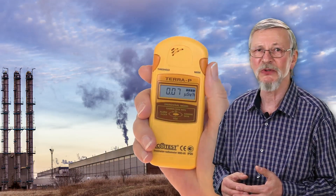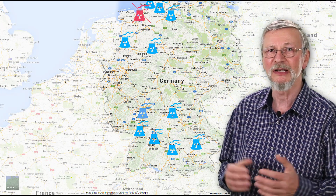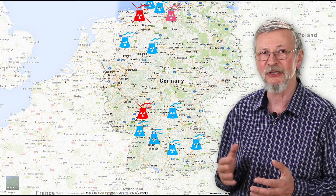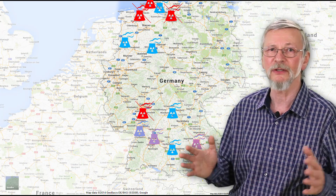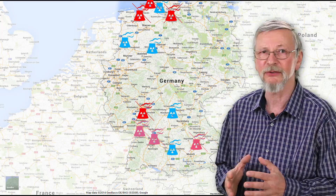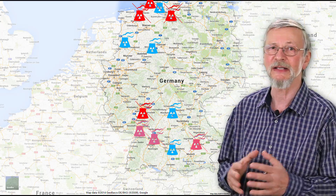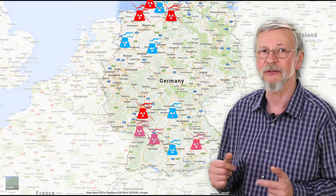After the Fukushima disaster, several countries started the process of re-evaluating their use of nuclear power. Some countries, such as Germany, are now working on closing down their nuclear power plants in the near future.